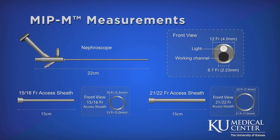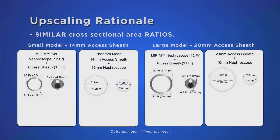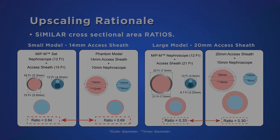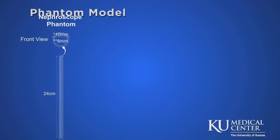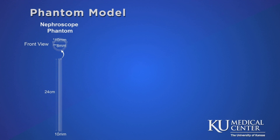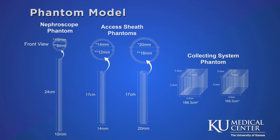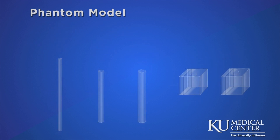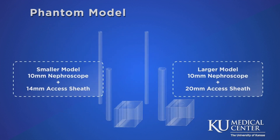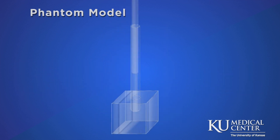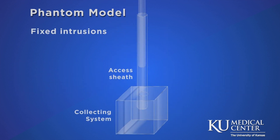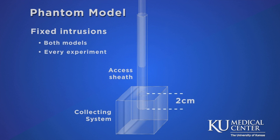Due to the small diameter of this set, a larger model was necessary. The measurements of the model were previously calculated to match a similar cross-sectional area ratio between the nephroscope and the access sheath. The nephroscope phantom was 10 mm in diameter and 24 cm long. The access sheaths had the same 17 cm length but different size diameters. As we had different size access sheaths, a smaller and a larger model were both assembled. We used the same fixed intrusion distances in both models throughout every experiment.